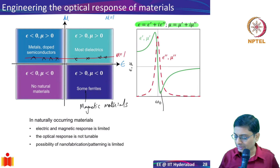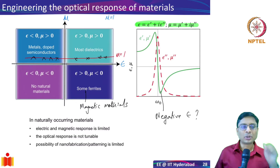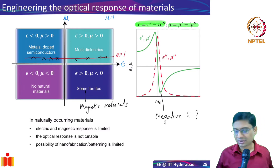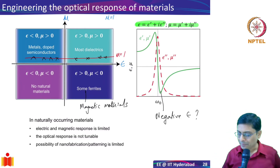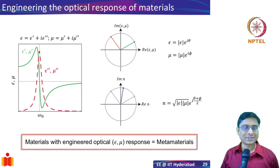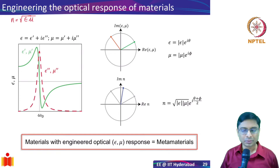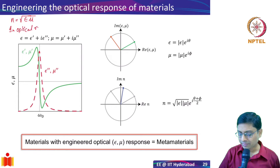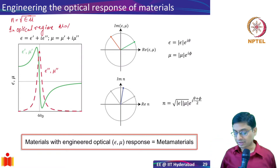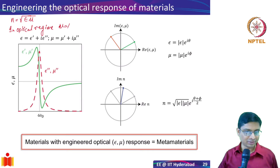What does negative epsilon mean? Negative epsilon essentially means that the polarization is going to be out of phase with the electric field. When we studied Maxwell's equations, I said N is going to be the square root of epsilon — but that was a simplification. The full refractive index is the square root of epsilon times mu. In the optical regime, mu typically equals one, so N turns out to be the square root of epsilon — but that's not a general scenario.